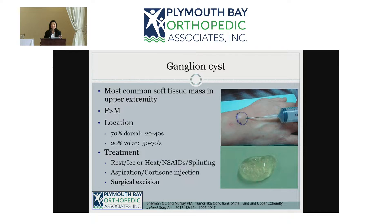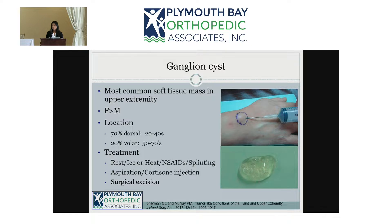Dorsal cysts are usually seen in the younger population and volar cysts are more common in the older population. For treatment of ganglion cysts there are really only three things you can do: the first is conservative measures — rest, ice or heat, anti-inflammatories either oral or topical — and you can try splinting as well. The other two options are aspiration with cortisone injection or surgical excision.